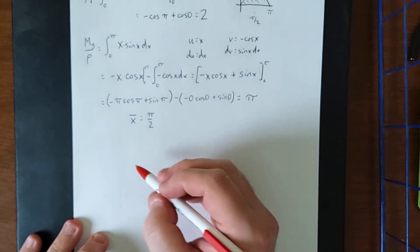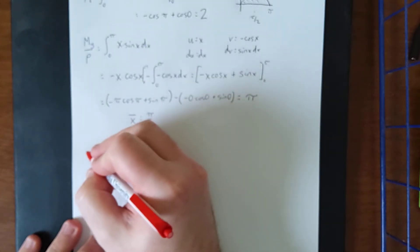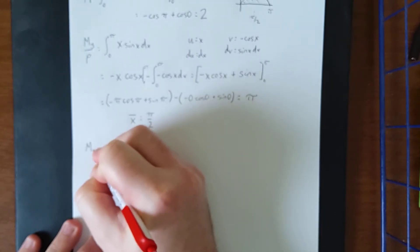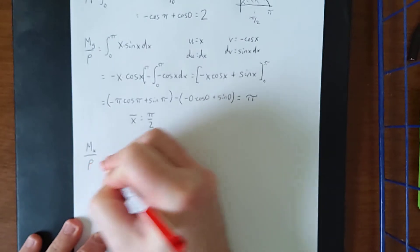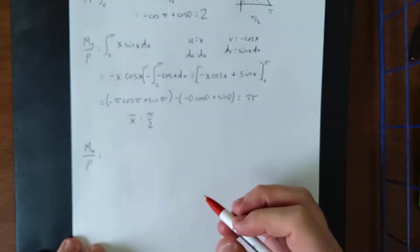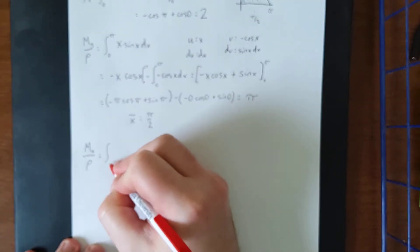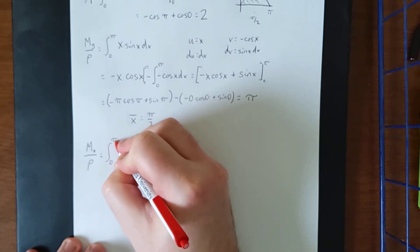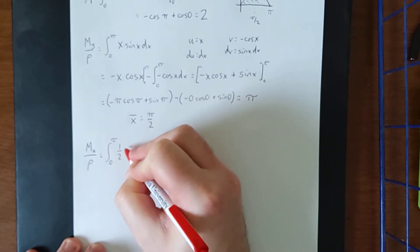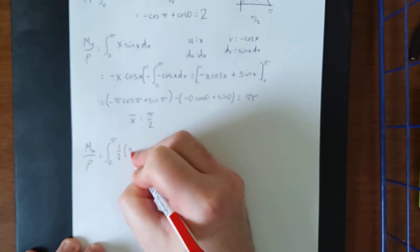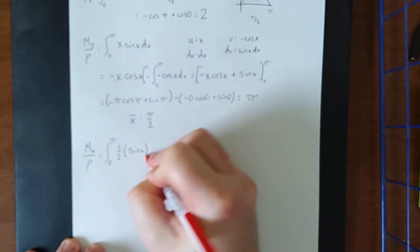So with those things in mind, let's keep this guy going. This time we'll do the moment about the x-axis divided by rho, disregarding the density of our lamina here. This one will be the definite integral from zero to pi of one half times the function squared, function once more being the sine of x.